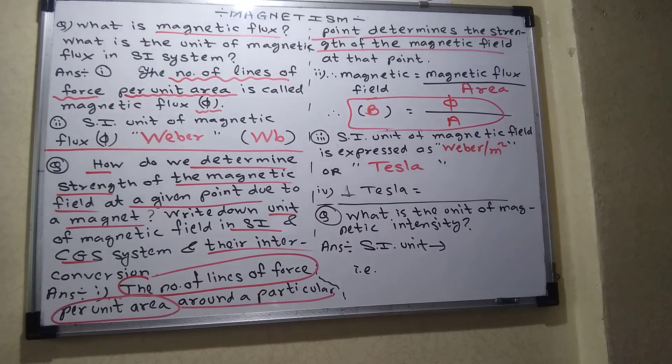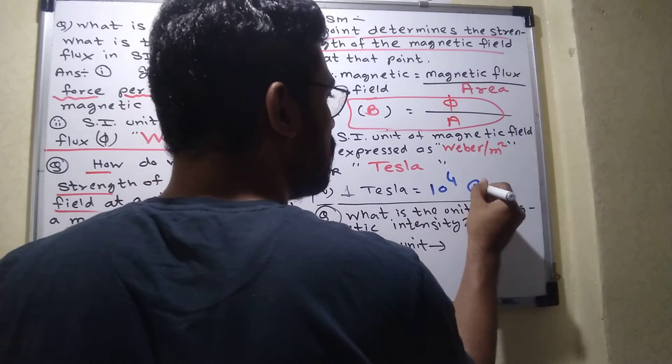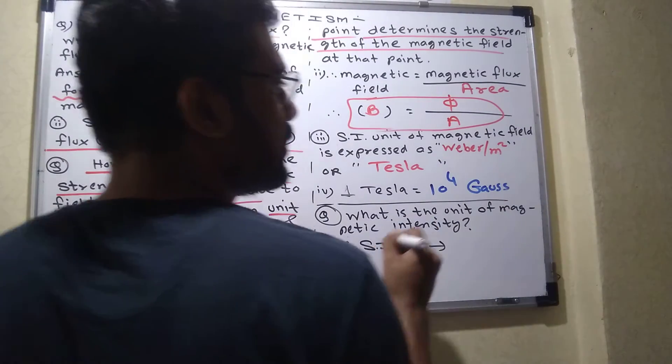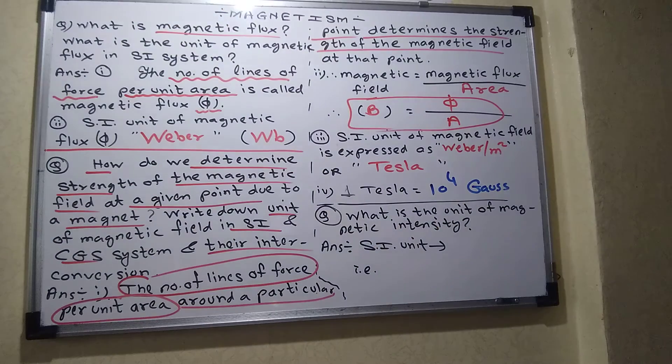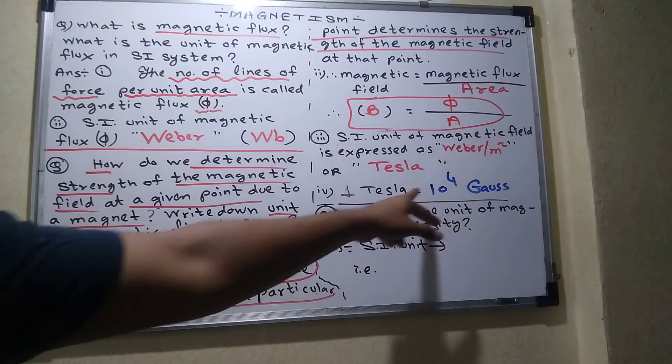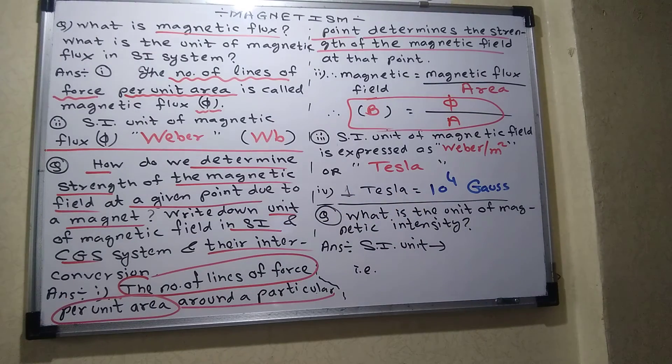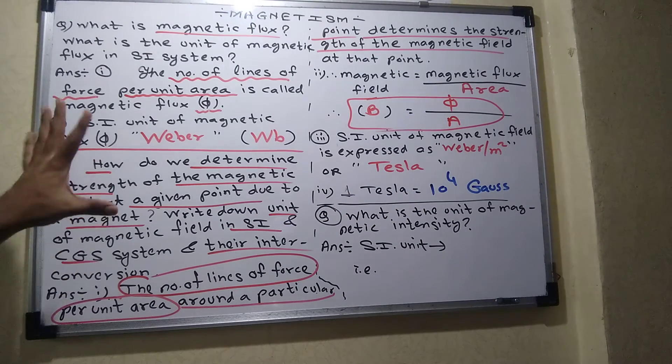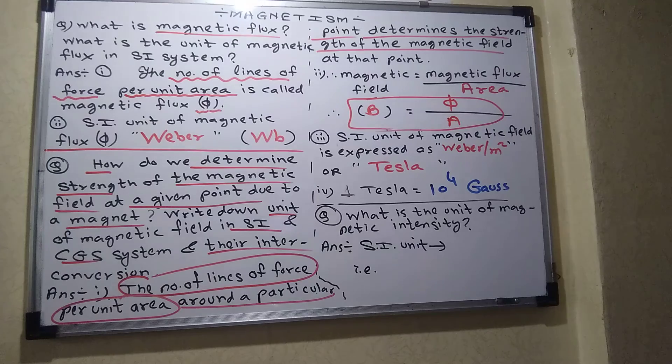Now question is what? What is in CGS? CGS unit is gauss. 1 tesla equals to 10 raise to 4 gauss. 10 raise to 4 means how much? 10,000. Okay. So gauss is a CGS unit of magnetic field. And 1 tesla equals to 10 raise to 4 gauss. So this is little bit about magnetic field. Hope so you understood.